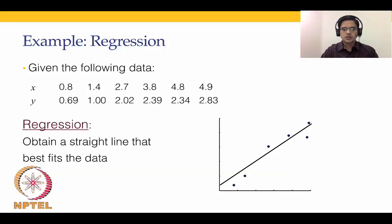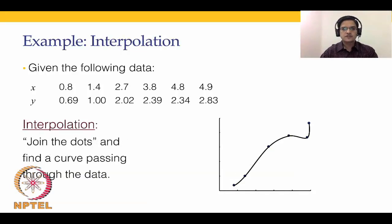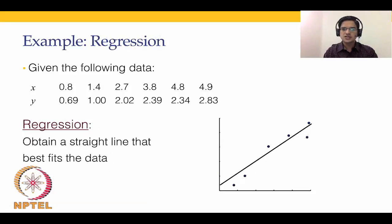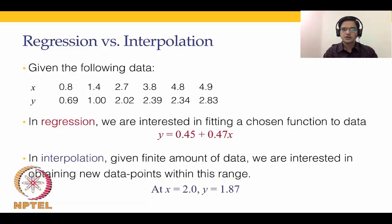Interpolation is joining the dots, which basically means we want to find a curve that passes through all the data points. We use interpolation to fill in missing data. For example, if this is our dataset and we want something at x = 2.0 but there is no data available there, we use interpolation. We use regression when we need a functional form y = f(x) and want to find the parameters that best satisfy that functional form.